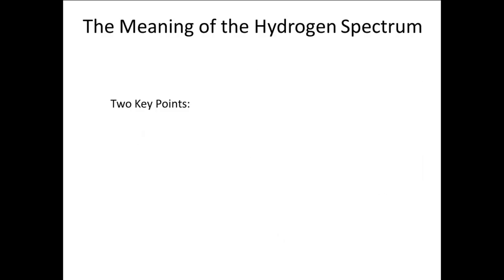There are two key points about the spectrum of hydrogen, and indeed about all spectra of the elements. These two points are: one, the spectrum of hydrogen, and indeed of all the atoms, is made up of discrete lines, which are specific energies of light.